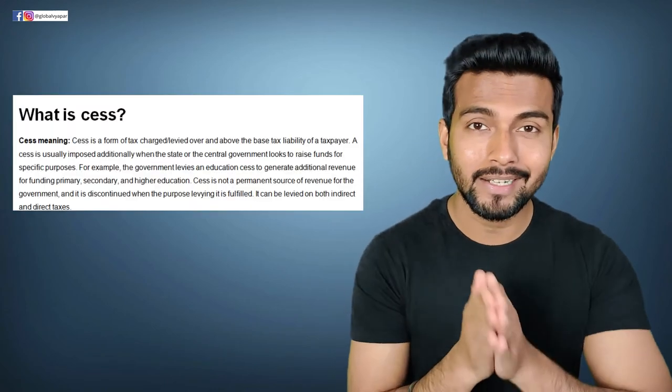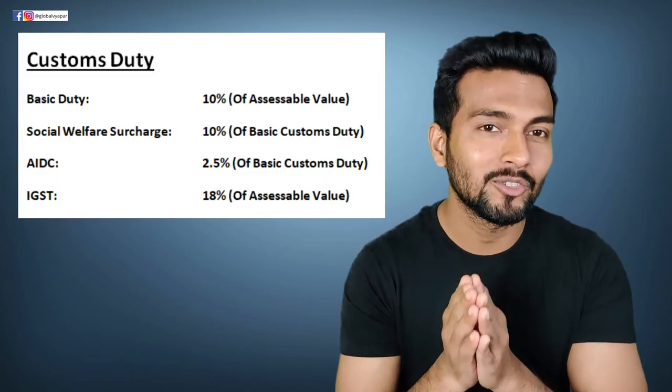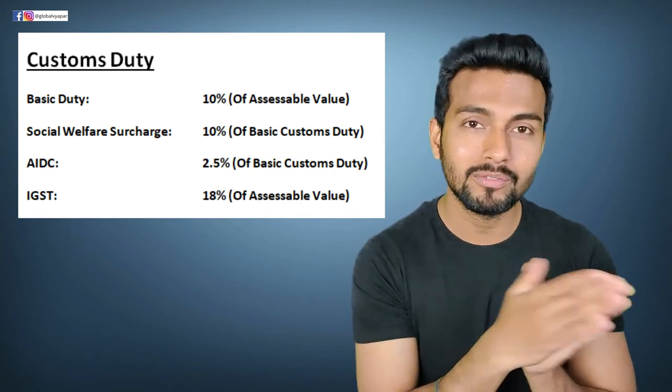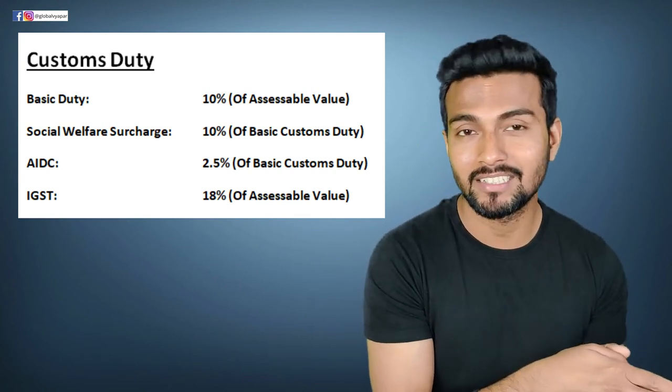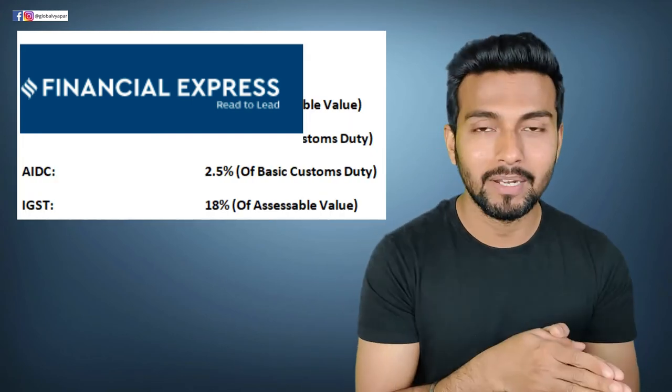So what happens in this case? Cess - first of all, you need to understand cess. Cess is a tax which is on the tax. Do you understand? Suppose 10% of the customs duty is there, the cess is 2.5%. So 2.5% of 10% will be charged on customs duty. Now, the education cess was 10% in most cases. Now, 10% plus 2.5% - gold is reduced. So cess is what happens? Cess is also a tax, but not customs duty.